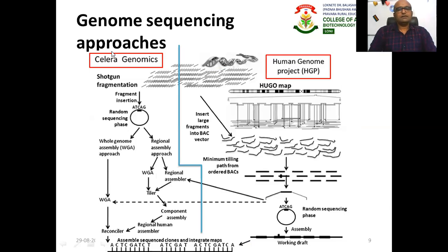Two different approaches were used when the Human Genome Project began. Two players were working on the human genome at that time: Celera Genomics, a private company, and the publicly funded Human Genome Project run by the government.